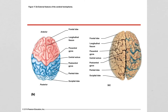Here's a superior view of the brain. There's one more fissure I'd like to talk about: the longitudinal fissure, which divides the brain into left and right hemispheres. Here we have a preserved brain and we can see that nice longitudinal fissure.